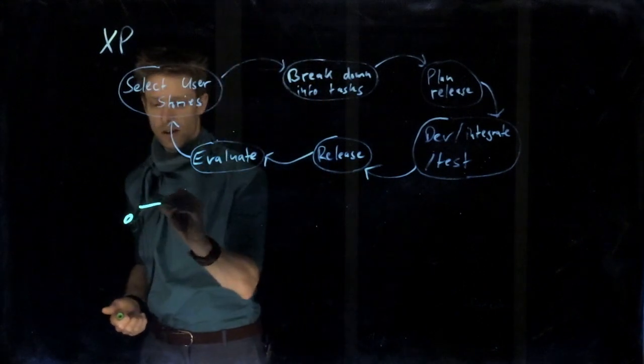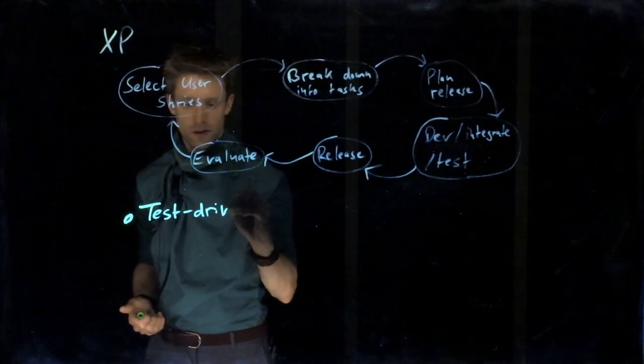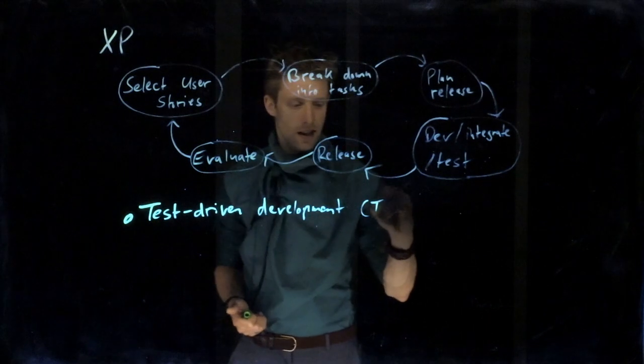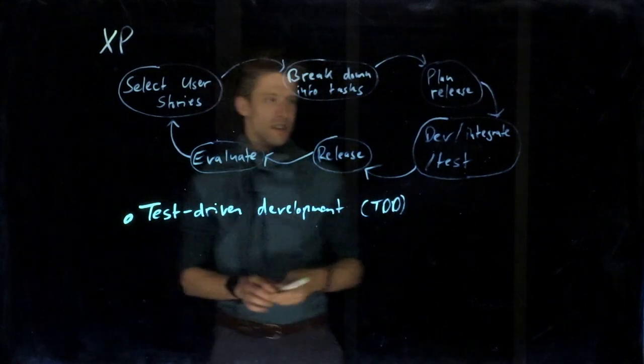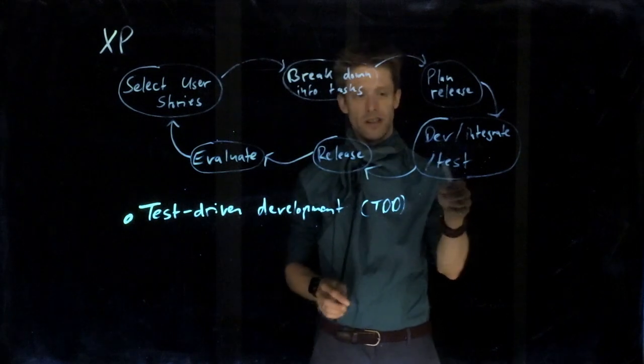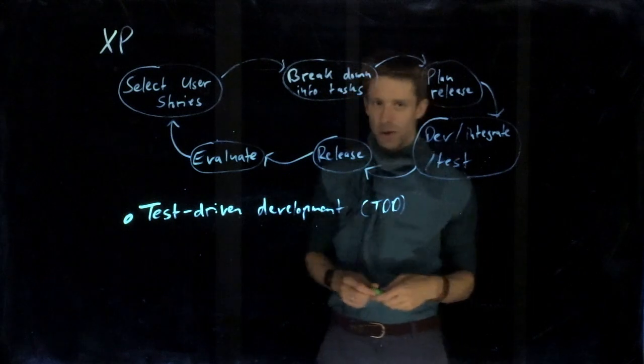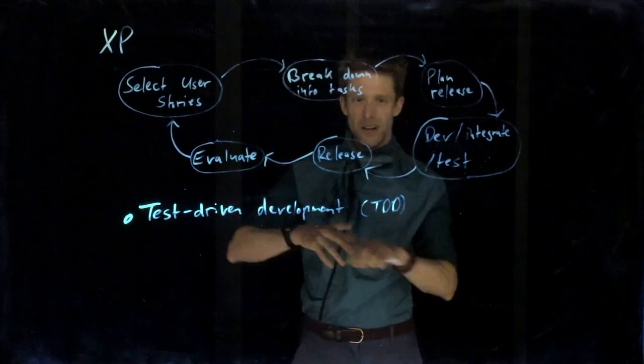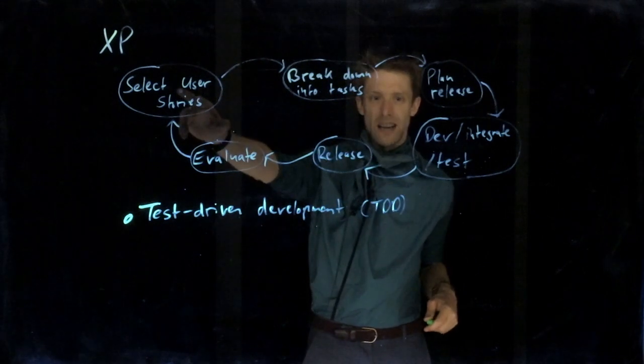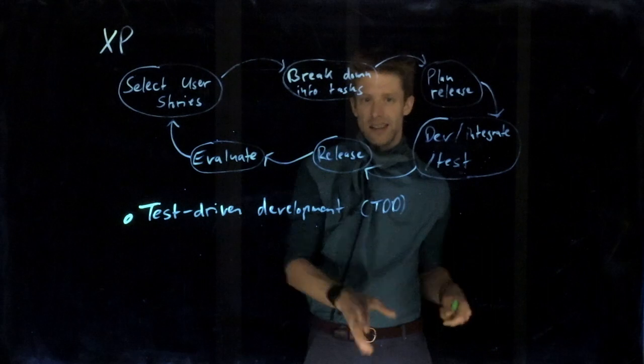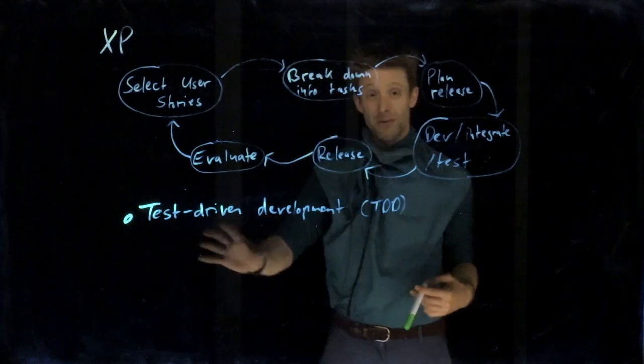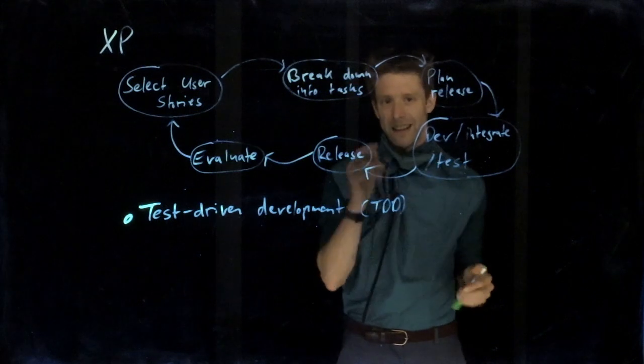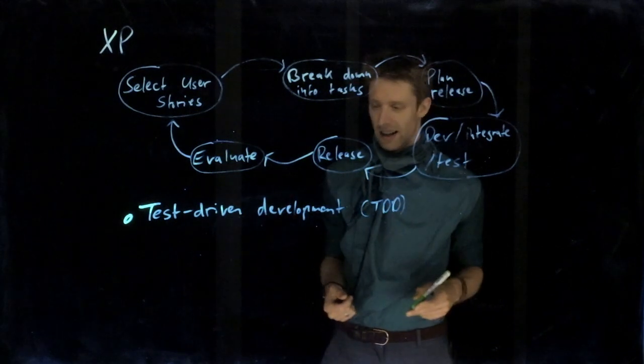The first one is called test-driven development, or short TDD. And the idea in test-driven development is that you don't do development and then testing, but you actually write your test before you start developing. Not just start writing code and then test it, because that usually leads to the tendency to just write the test in a way that it fits your implementation, but it might not fit the actual requirement. So you might test the wrong thing just because you already know how you implemented it. So the idea is if you instead write your test first, you will focus much more on what is needed, what needs to work in the end, and then you do the development until the test passes. That's the idea in TDD.